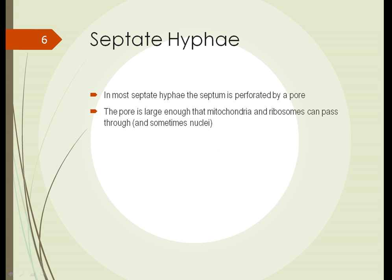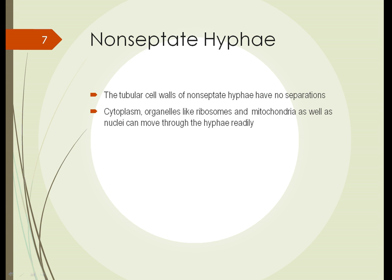Septate hyphae have the septum perforated by a pore. This pore is large enough that mitochondria and ribosomes from one cell can pass through to a neighboring cell, and sometimes even a nucleus can pass through. In non-septate hyphae, the tubular cell walls don't have those separations, and the cytoplasm and organelles — ribosomes, mitochondria, and nuclei — can move freely up and down the hyphae.